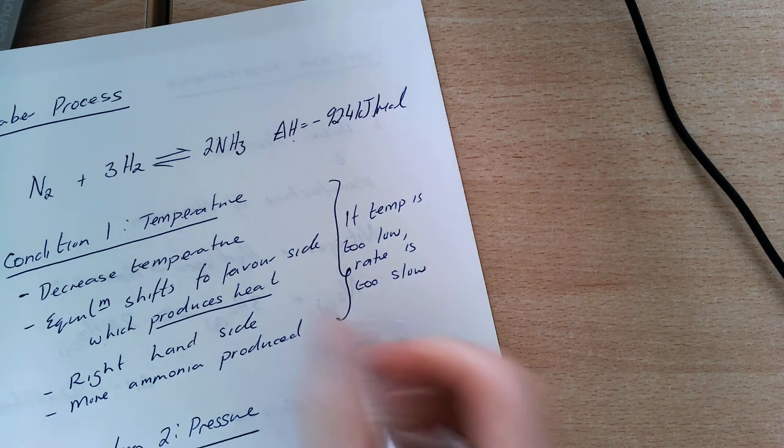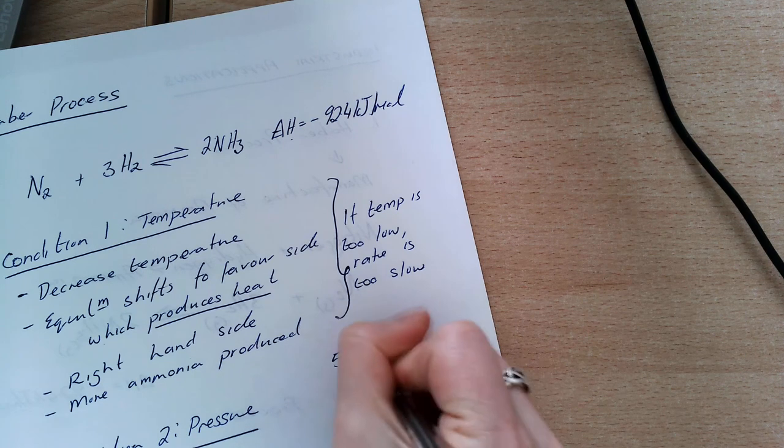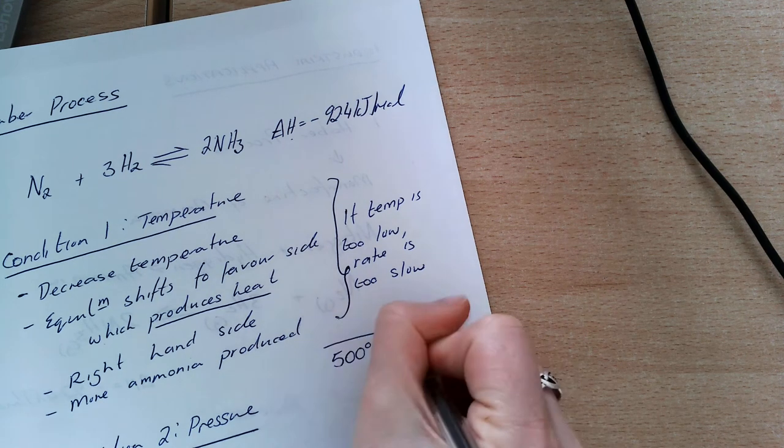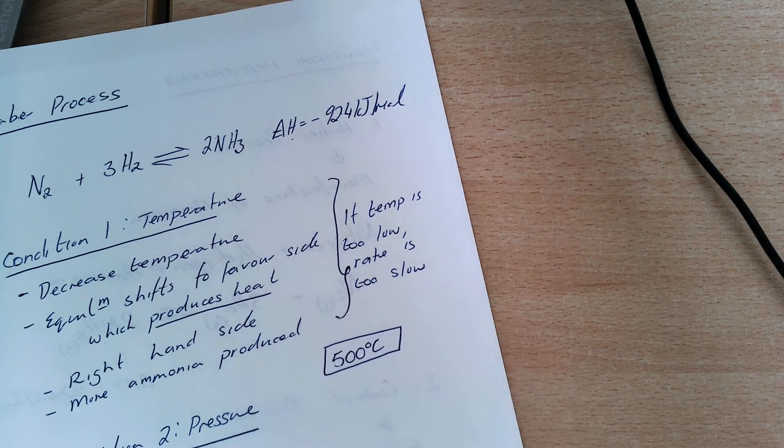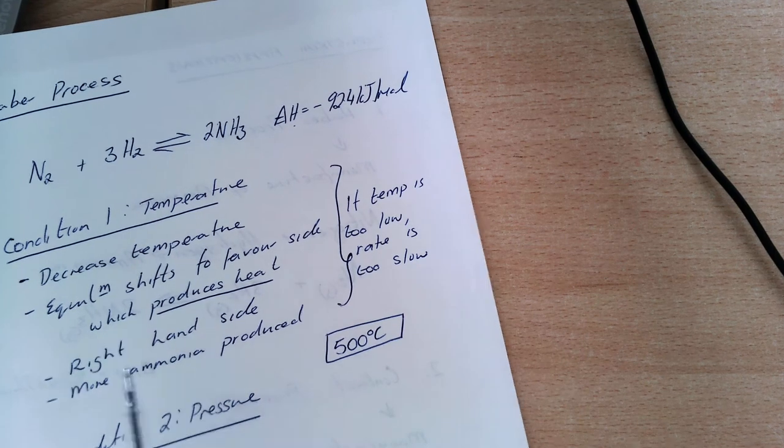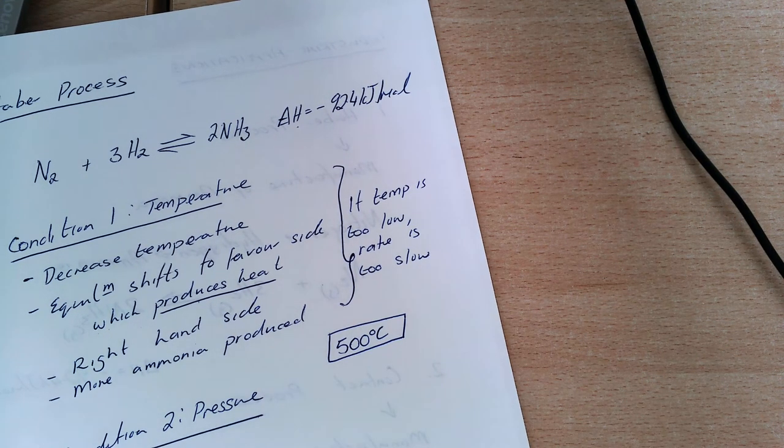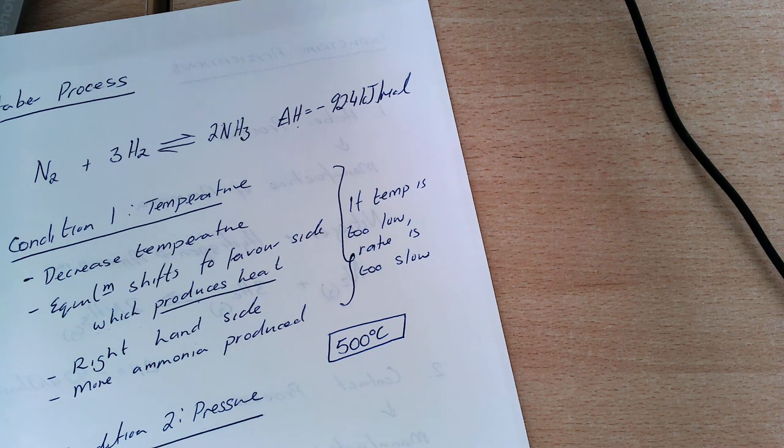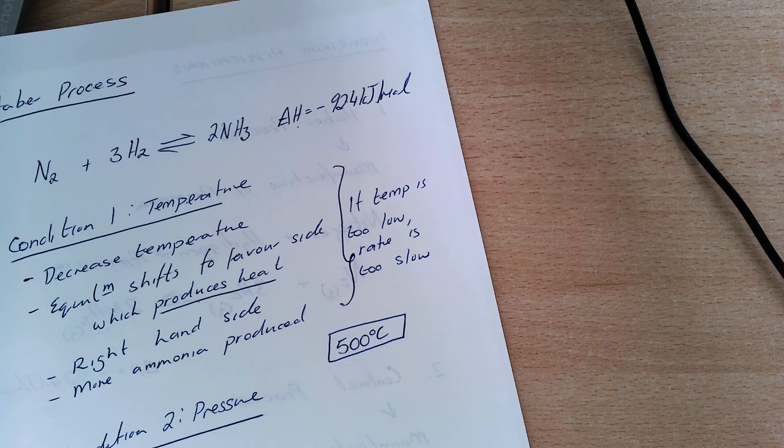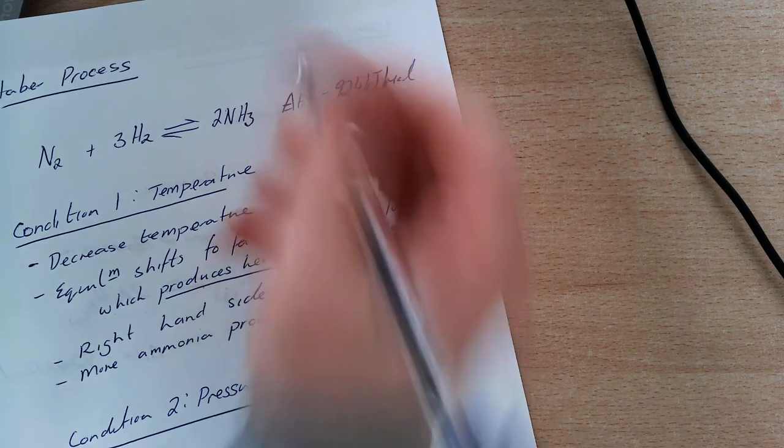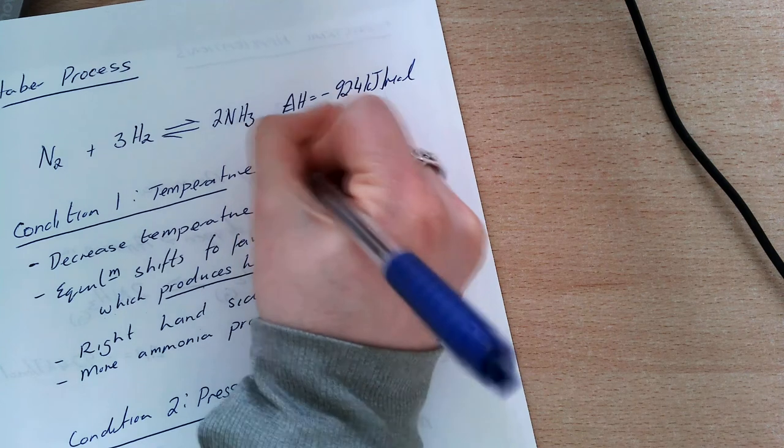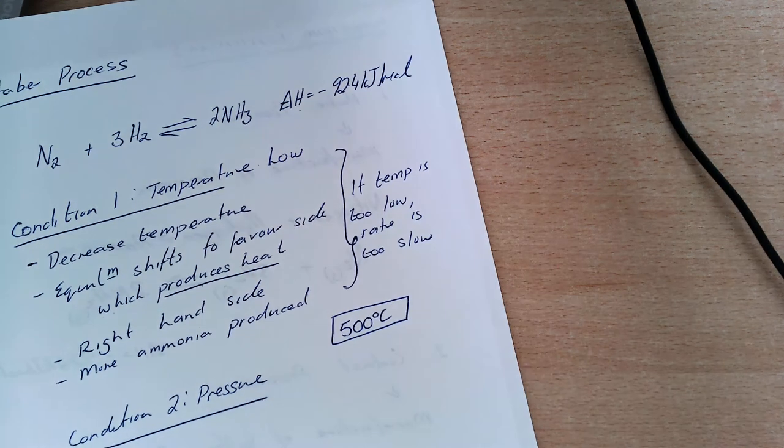What they actually decide on is 500 degrees Celsius, and you need to know that value and the reason why. To favor the side which produces heat, I need to decrease the temperature. But if my temperature is too low, the rate is too slow, so I have to have a compromise. In general, the condition I want is temperature low.